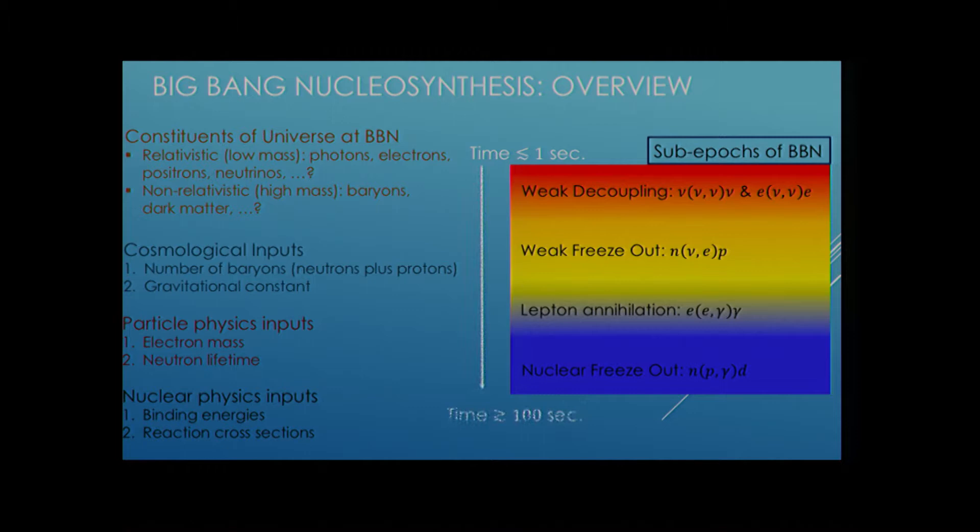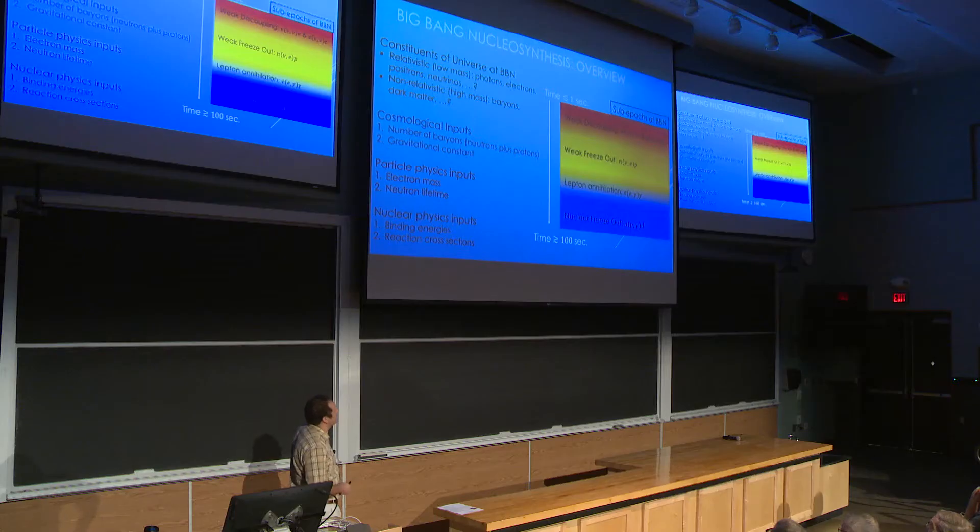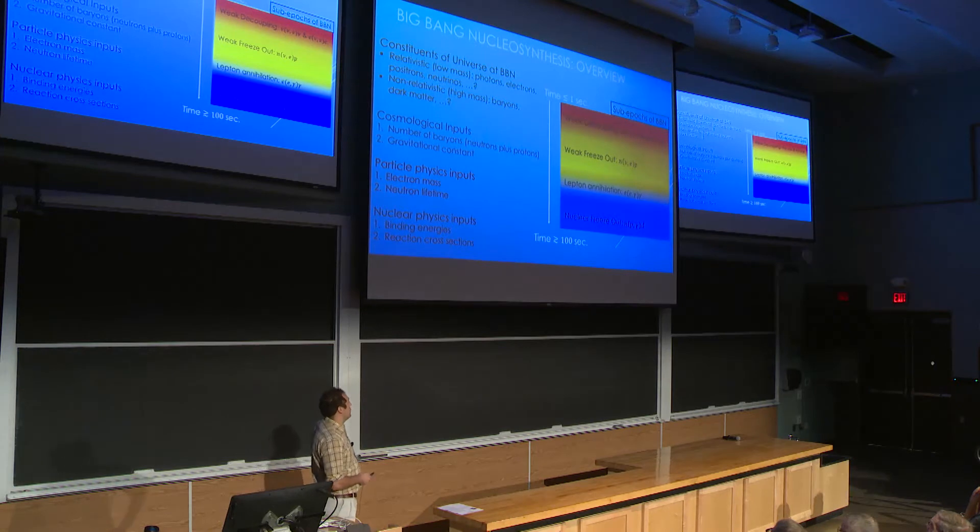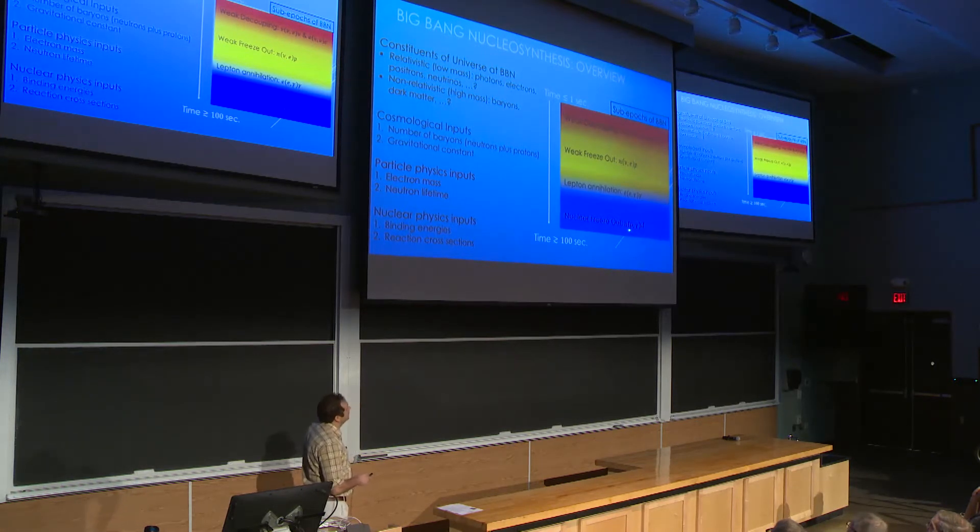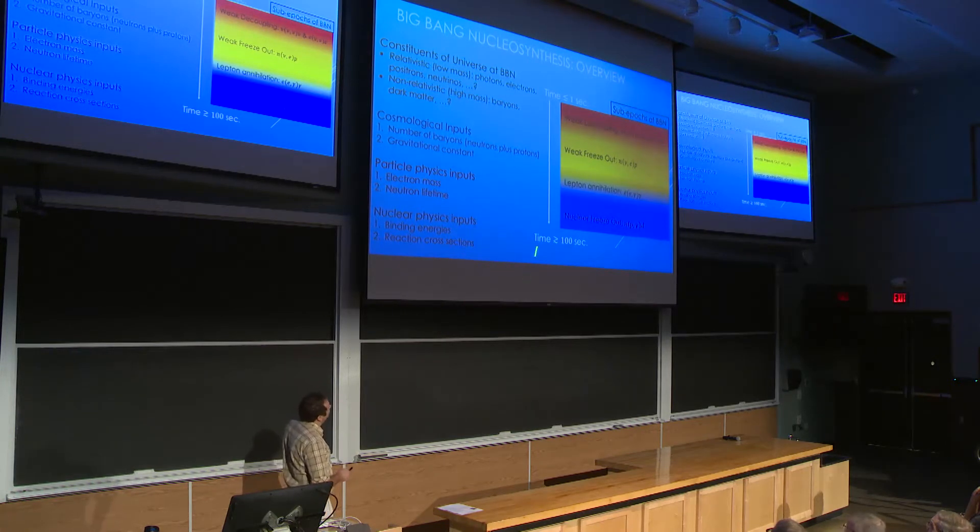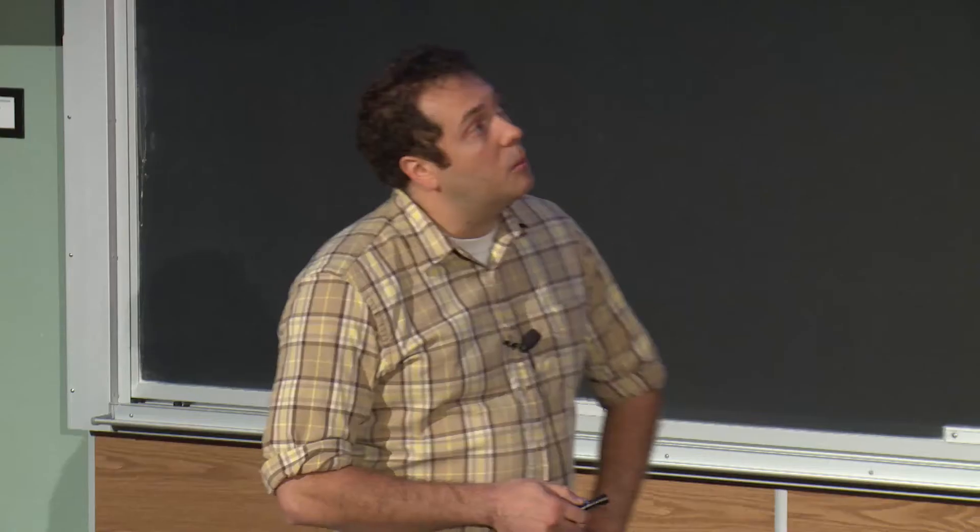The neutron decays in our universe with a lifetime of 880 seconds. For your nuclear physics input, you need the binding energies, which we went over, and then you need the reaction cross-sections, which connect the light nuclei. So BBN is actually multiple sub epochs, and I won't go into a lot of details on here. These are basically just supposed to show neutrinos interacting during weak decoupling, neutrinos interacting with neutrons and protons, weak freeze-out.